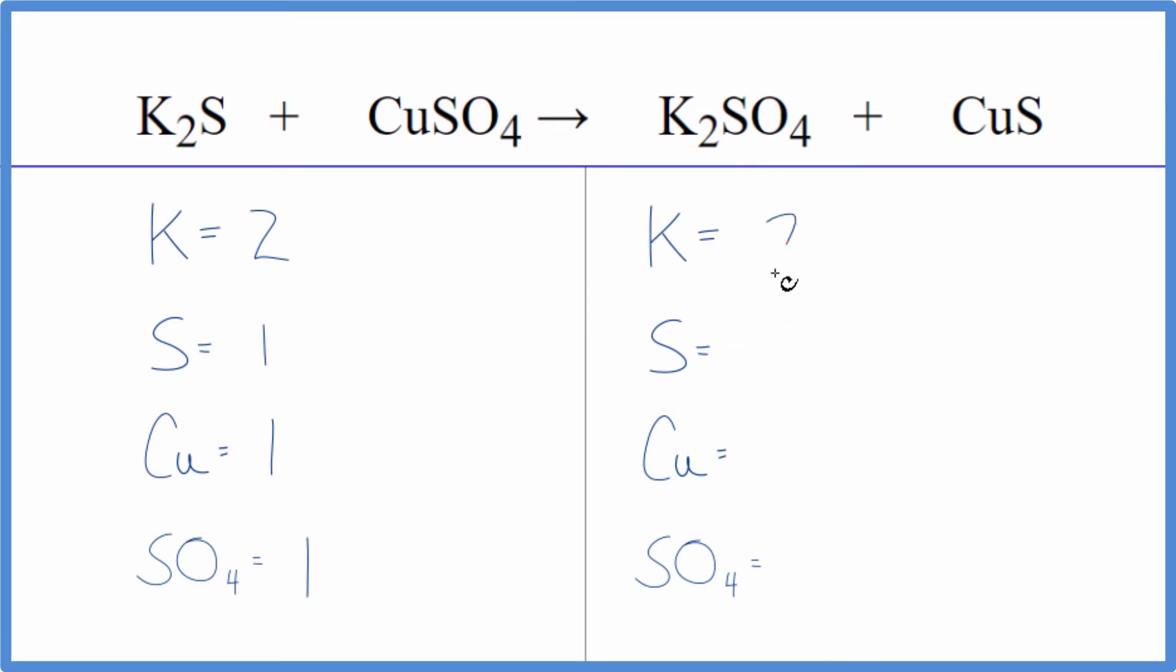On the product side, two potassium, one sulfur, one copper, and then I'm counting this as just one thing, one sulfate. So you can see this is a lot neater. It's a lot easier to work with, and all of a sudden we see that everything is the same on both sides. So this equation is actually already balanced.